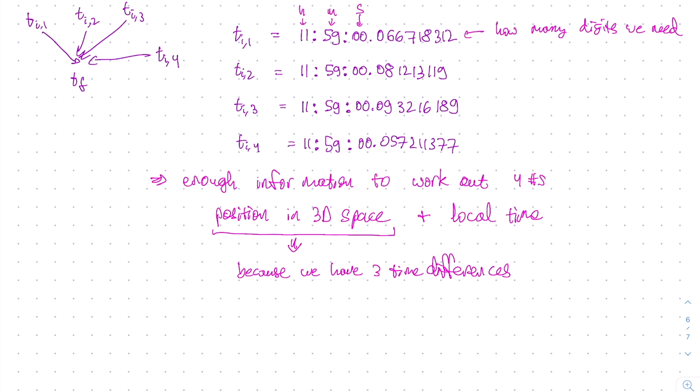But a little bit of math is required to convert the four initial times, ti1 through ti4, into the three time differences. Now this math is a little bit ugly, and it doesn't really teach us anything more than the concept we already have, and therefore we skip it. If you ever need to work it out, you can certainly do that or just look it up on the internet.